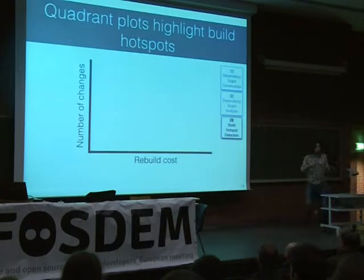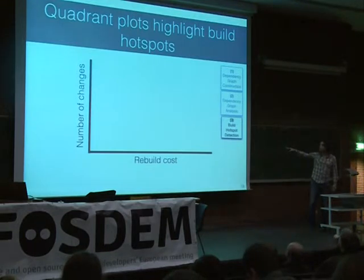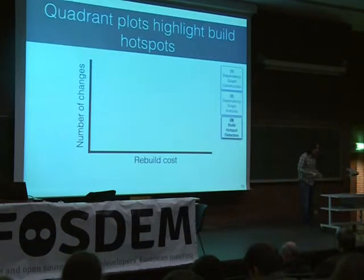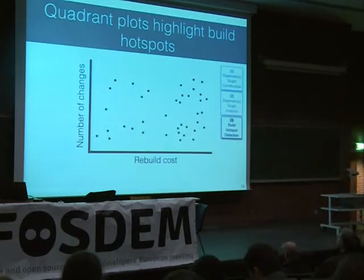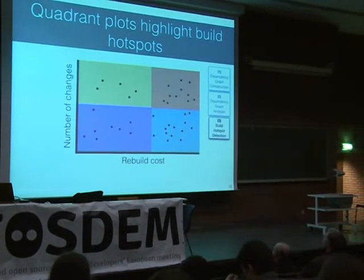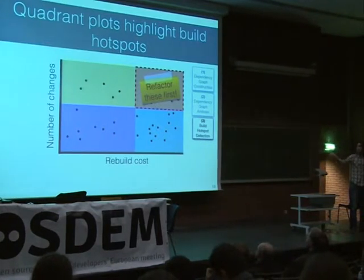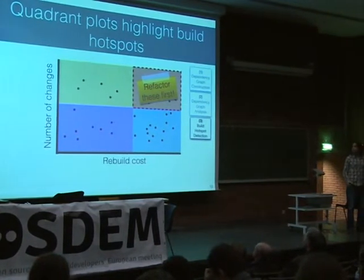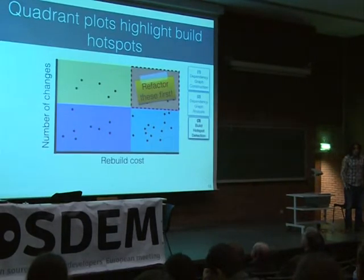Finally, we bring these two pieces of information together on a quadrant plot. On the x-axis, we show the rebuild cost. On the y-axis, we show the number of changes. We plot each file's position on this x-y grid. Using configurable thresholds — depending on how patient you are or how frequently things are changing in your system — we argue that the files up in the top right corner are the ones you want to refactor first: the files that are slowly rebuilding and change frequently.